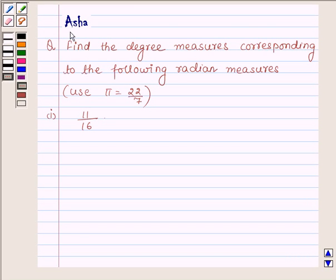Hi and welcome to the session. I am Asha and I am going to help you with the following question which says: Find the degree measure corresponding to the following radian measures. First is 11 upon 16.